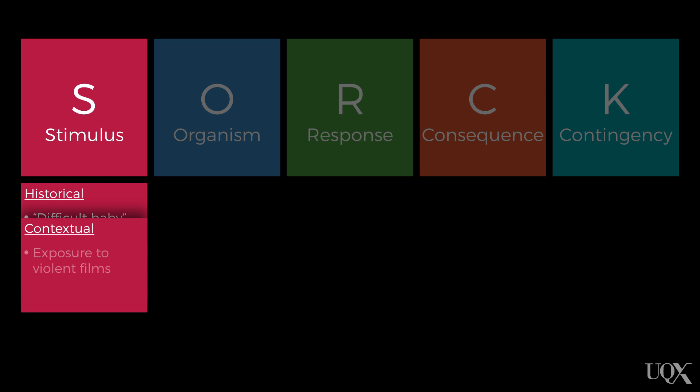The second heading is contextual. Stimuli that are occurring concurrently with the problematic response increase the likelihood of its occurrence, but don't directly trigger or elicit the response. One of the most relevant contextual stimuli for Jamie is his exposure to violent films.